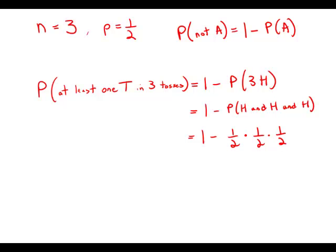So this would be one minus one half times one half times one half. That is one minus one eighth. Changing that to eight over eight minus one over eight, we get seven over eight.